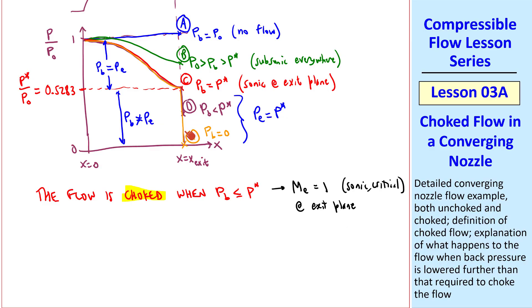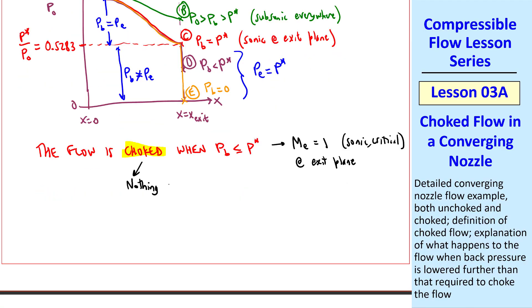Even when it's a total vacuum, nothing changes in the duct. In fact, I'll say that nothing changes inside the nozzle if you lower Pb less than P-star.